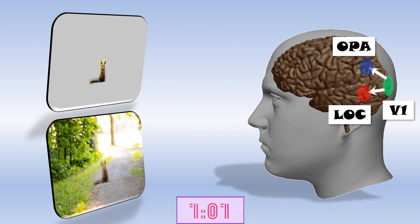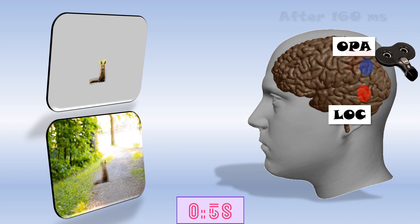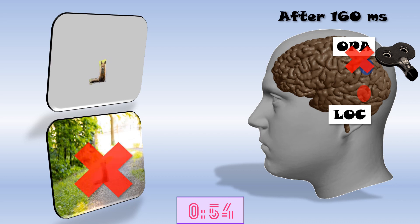Furthermore, they found that disruption of the scene-selective OPA made it harder to recognize objects with a background. Even though the OPA itself does not process the object information, it shows that scene information must have been used to recognize the object.